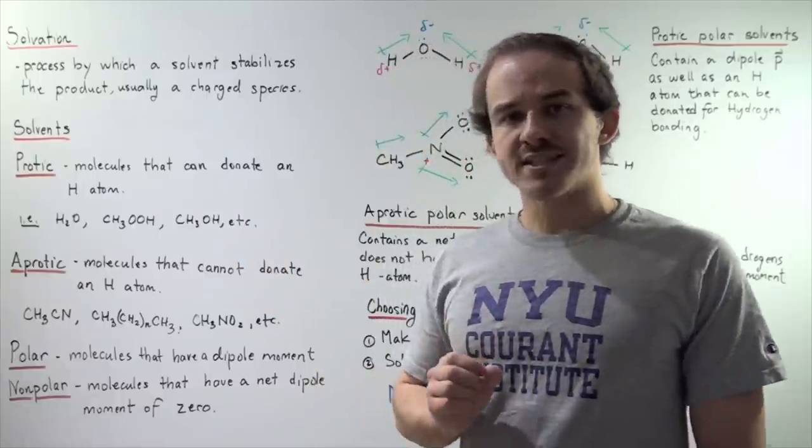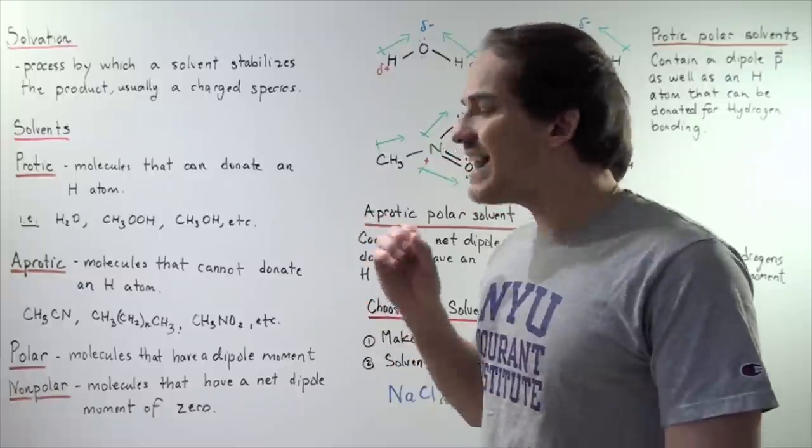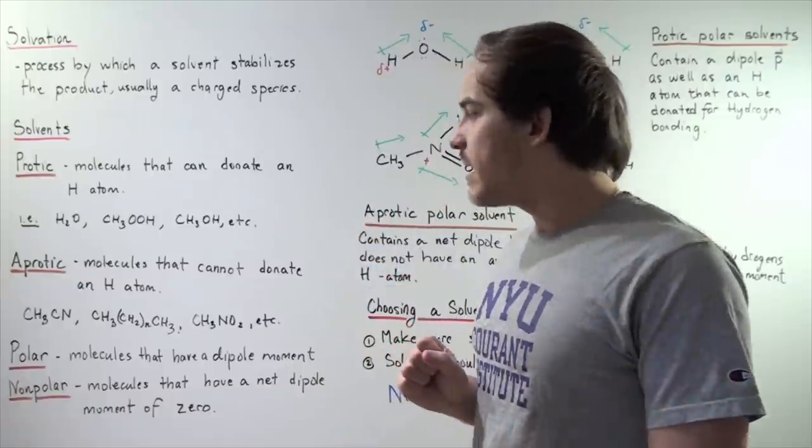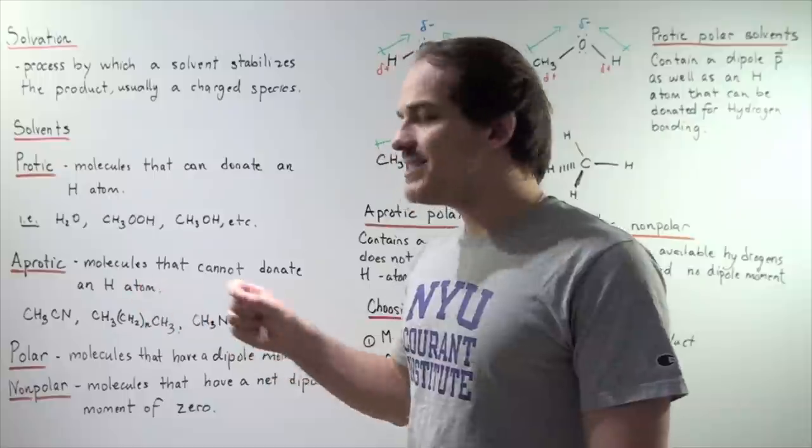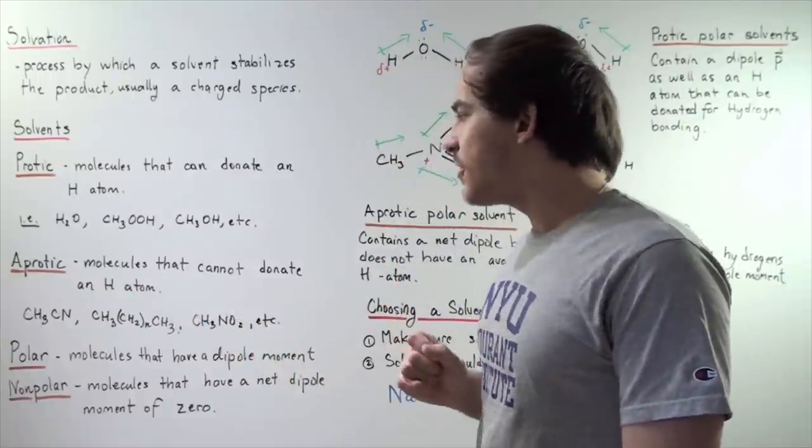Now, let's define aprotic solvents. Aprotic solvents are molecules that are not able to donate an H atom. And some examples include CH3CN, any type of hydrocarbon, and nitromethane.